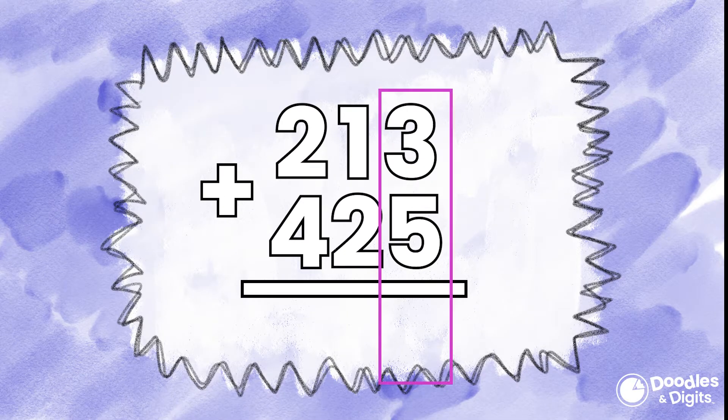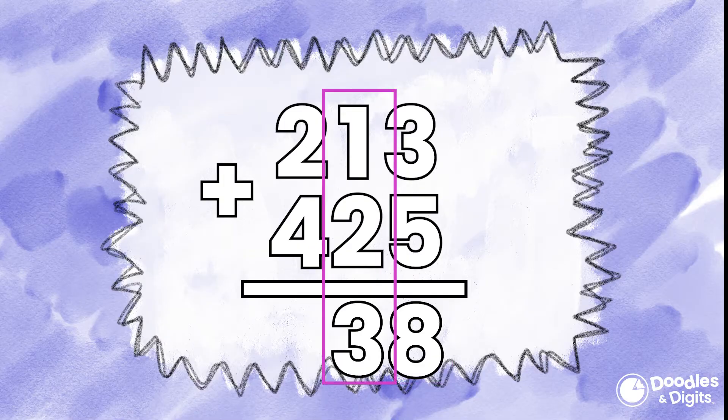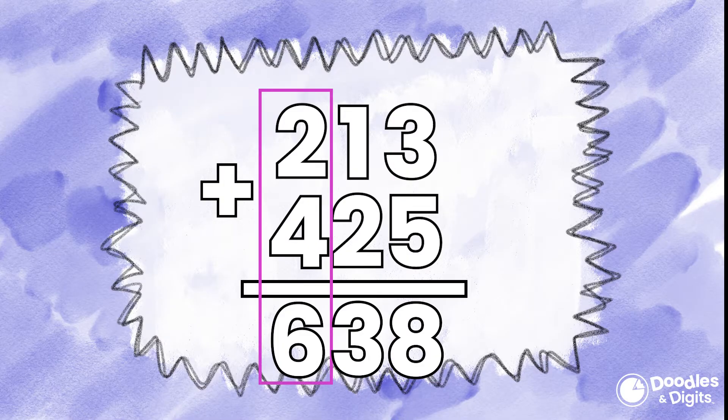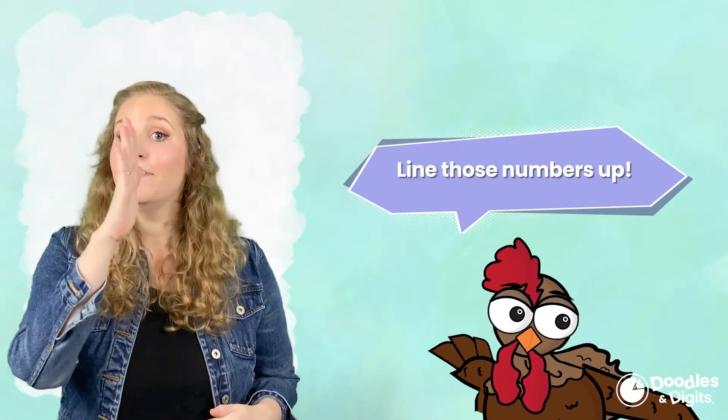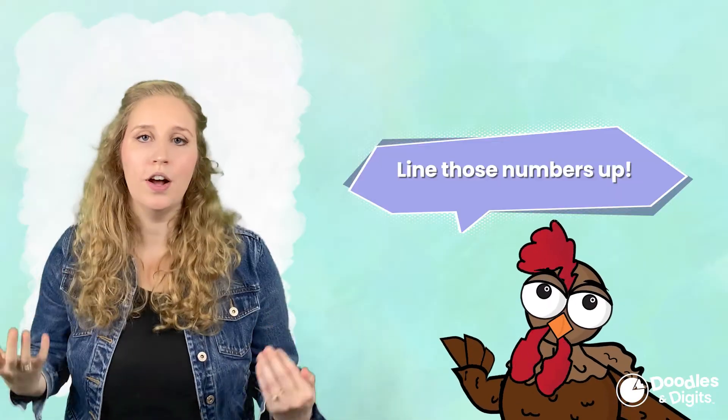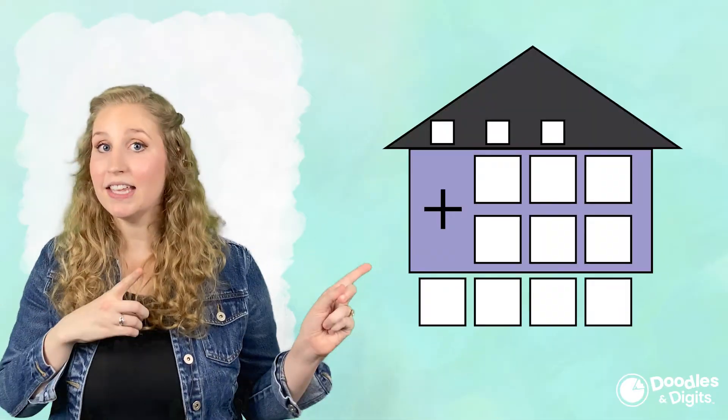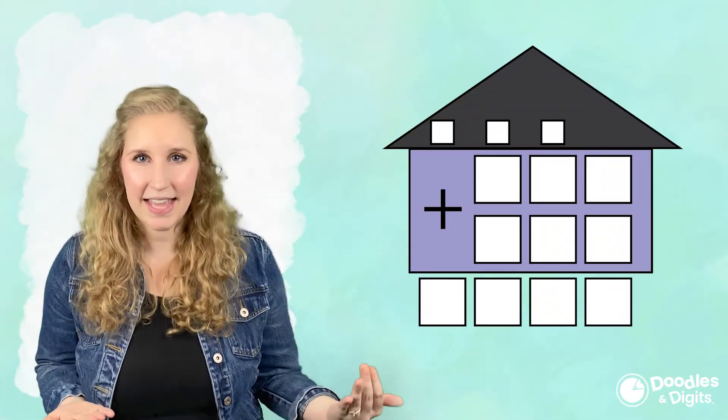We'll start in the ones. 5 plus 3 is 8, 2 plus 1 is 3, and 4 plus 2 is 6. Make sure when you're using the standard algorithm, you are lining them up very specifically. You can also use something like a chart like this to help you line them up until you get the hang of things.